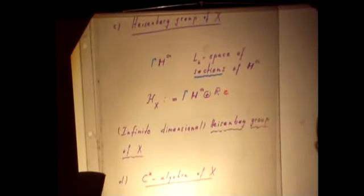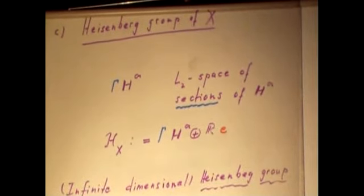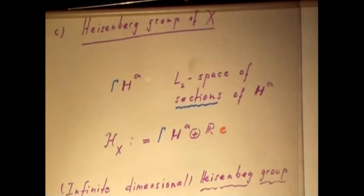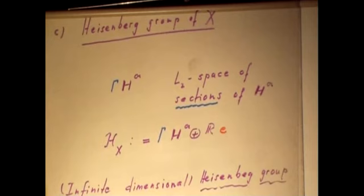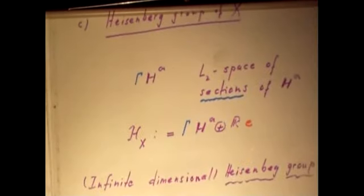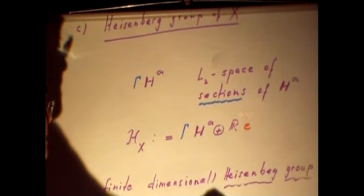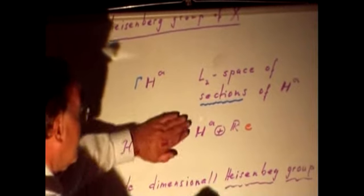This Heisenberg algebra bundle gives rise to a module due to the space of sections. It's an L² space, but we work with sections which fall off very rapidly — the Schwartz sections. This infinite-dimensional space is then complemented by an extra line to give this space again a structure of an infinite-dimensional Heisenberg group. On this space, the symplectic structure will be degenerate — but that doesn't matter; that's just the center, a large center. Usually the Heisenberg group or algebra has a one-dimensional center, but here one would have...